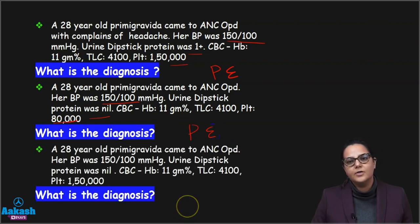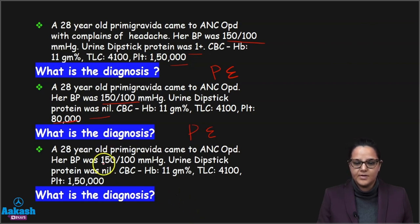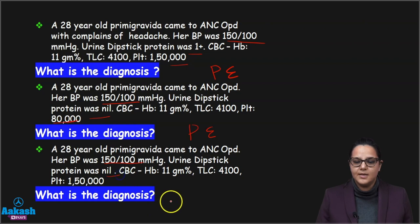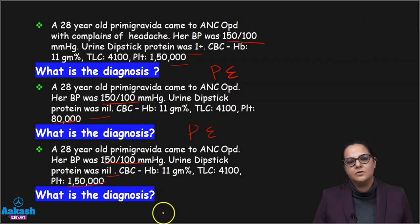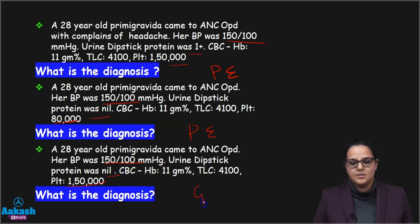Third: a 28-year-old primigravida comes to OPD with blood pressure 150/100, urine dipstick is nil, and platelet is also normal. The diagnosis is gestational hypertension.